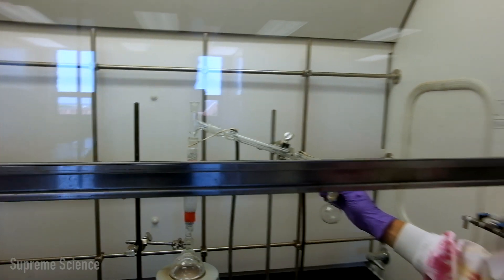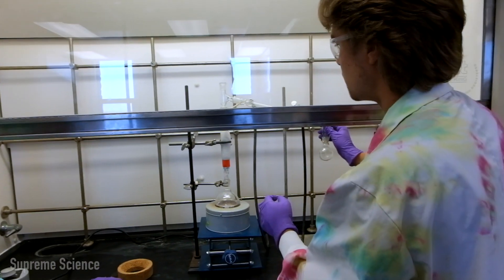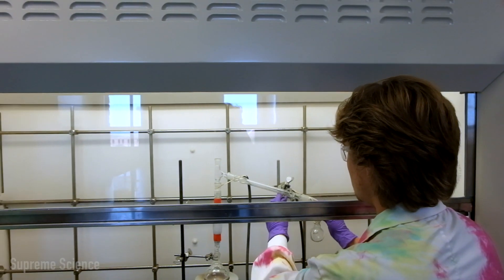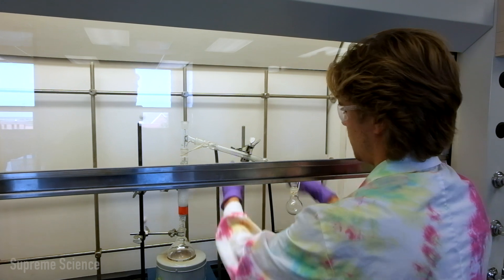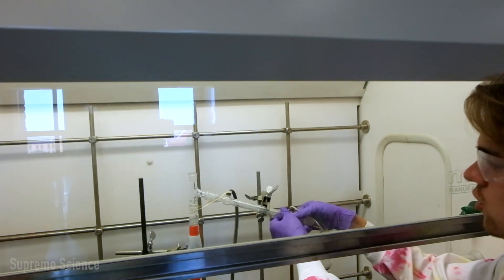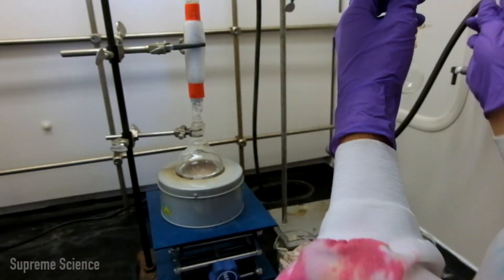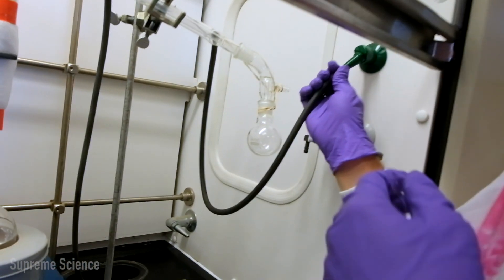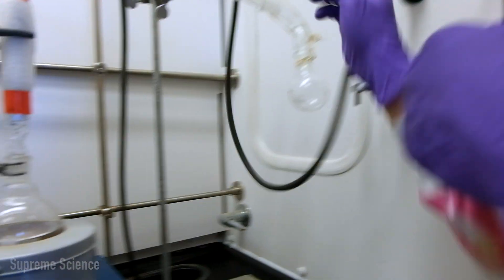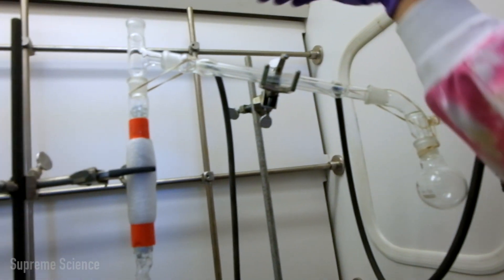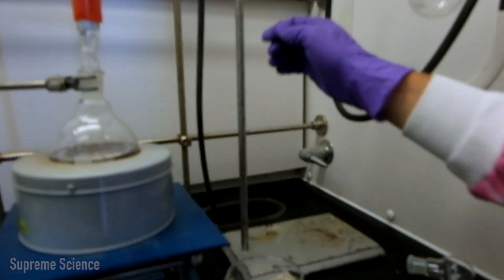We want to make sure that everything is straight, that the column's in a vertical position. Make sure that our clamp is supporting our condenser in the center. And we want to make sure that our tubes are pointing upwards so that the column completely fills with water. So we have the water connected from the water inlet to the bottom of the condenser, and then the top of the condenser to the drain.